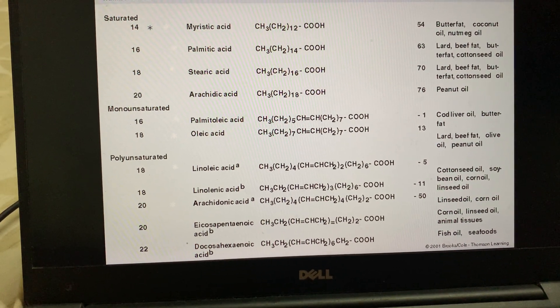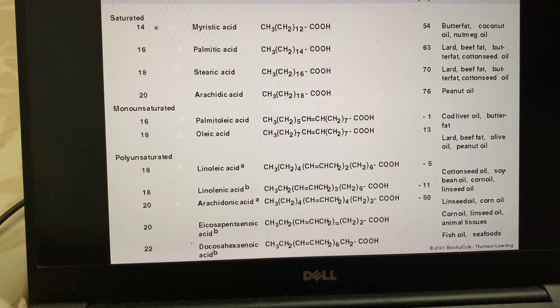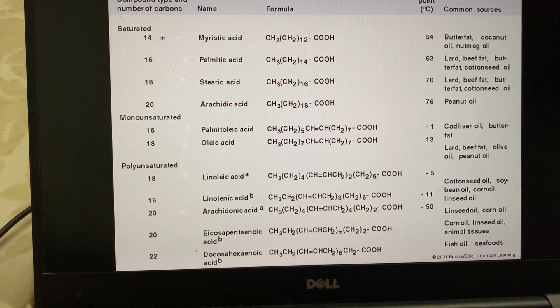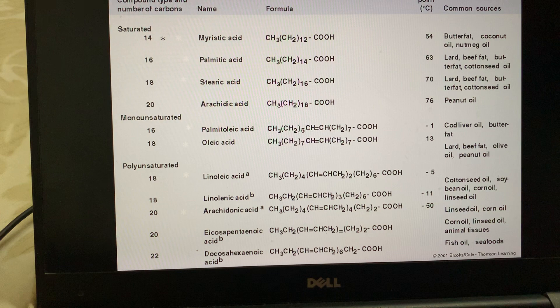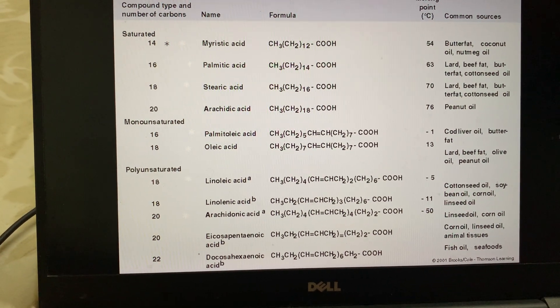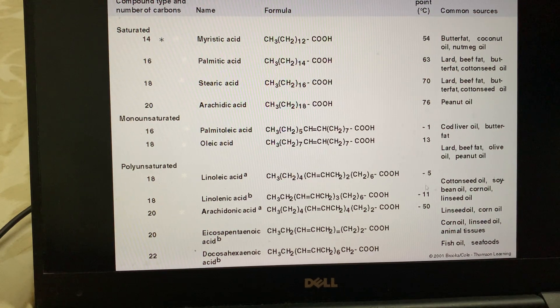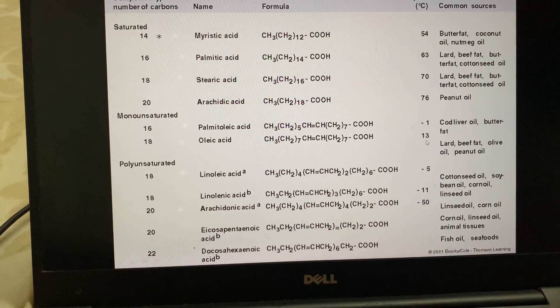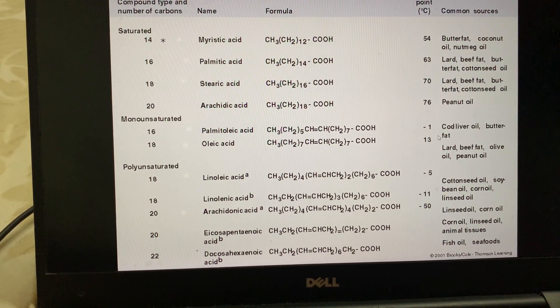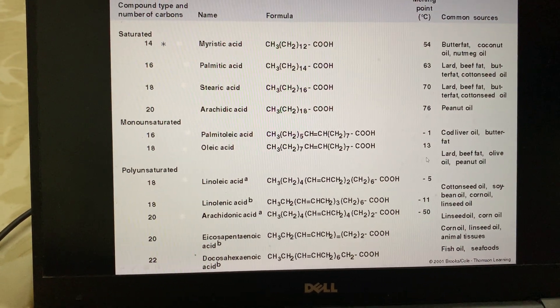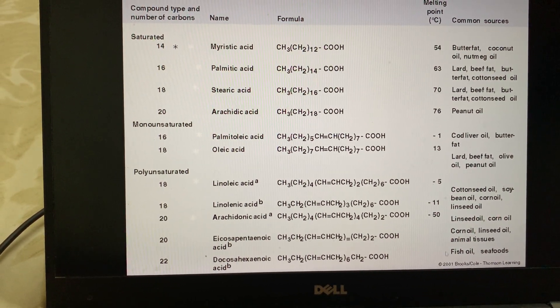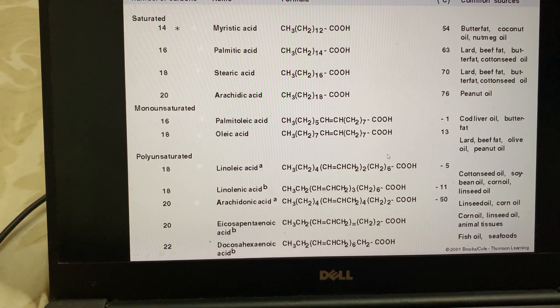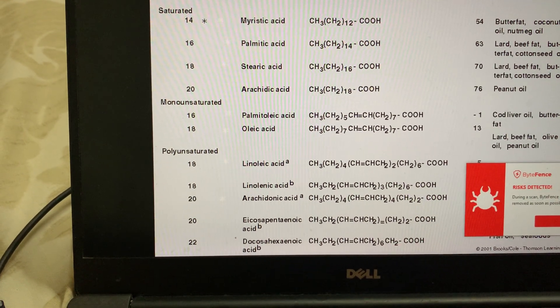For polyunsaturated acids, the melting points are even lower compared to monounsaturated ones. Fish oil and seafoods are sources for these types, and linseed oils are also sources for polyunsaturated fatty acids.